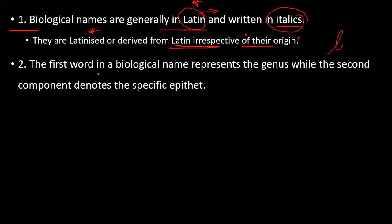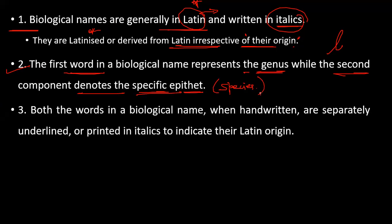Rule 2: The first word in a biological name represents the genus, while the second component denotes the specific epithet, that is the species. Rule 3: Both words in a biological name, when handwritten, are separately underlined, or printed in italics, to indicate their Latin origin.